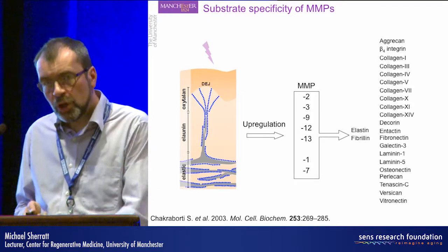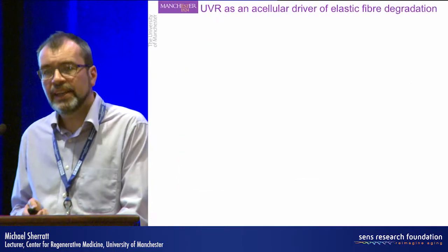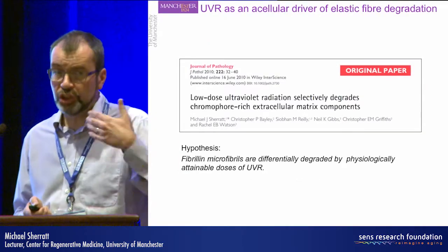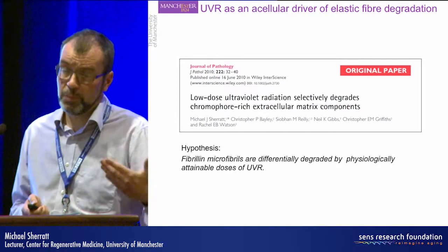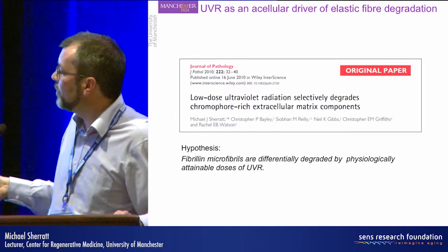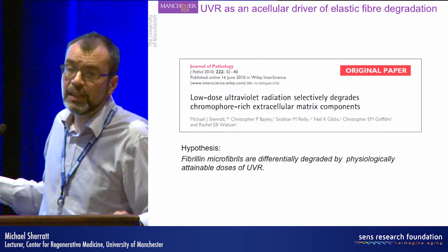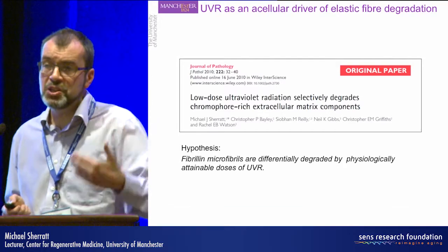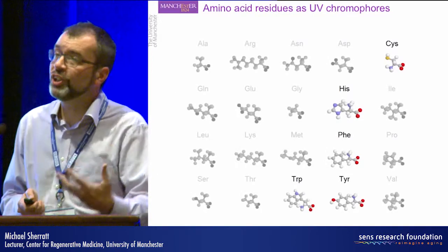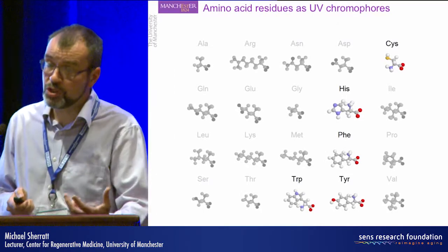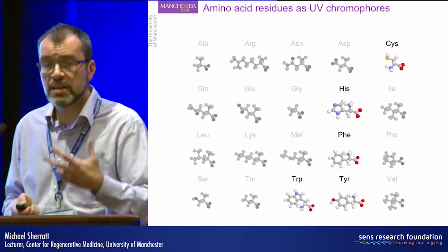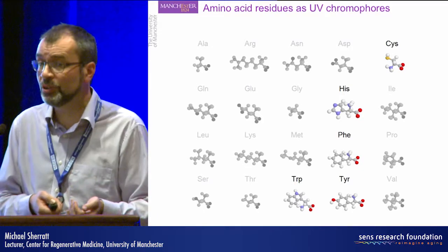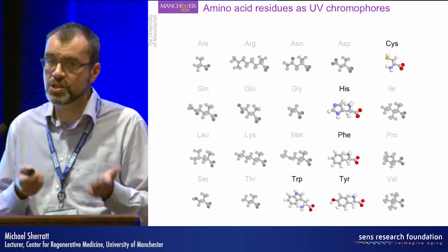Since publishing this work, we now have additional data demonstrating that the main pathway of this UV-induced degradation of fibrillin and fibronectin is via reactive oxygen species intermediates. This is important because it means that if we can predict the susceptibility of extracellular matrix proteins to reactive oxygen species, we can gain insight into remodelling in non-UV-exposed tissues, such as the aorta and the lungs.